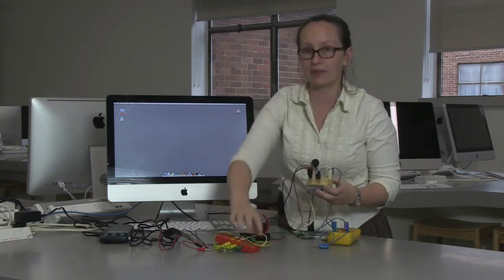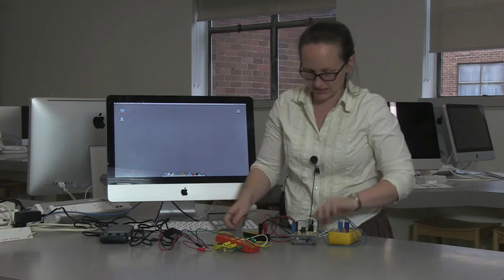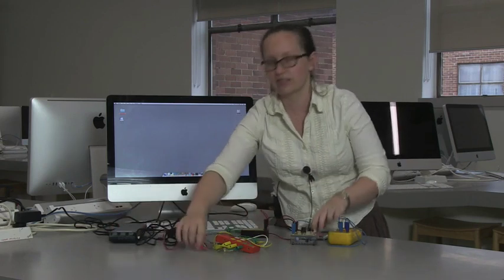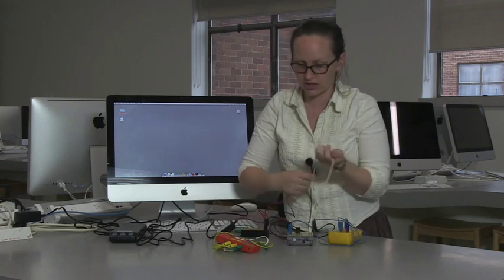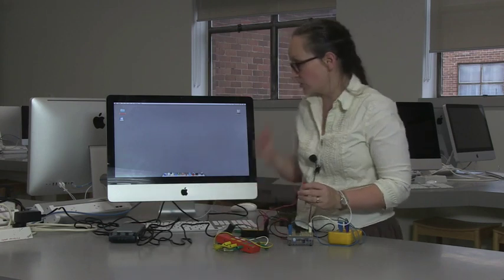Now, one really important point to remember in this experiment is between each one of collecting data, whenever you finish charging a capacitor, you need to discharge it. So, to discharge the capacitor, we just want to connect that positive plate to the negative plate. So, just take one wire and connect it across the two plates of the capacitor. So, like that, just one wire between the positive and negative terminal of the capacitor. So, before starting, you'll want to do that to each of the capacitors. You'll then run the current through it.